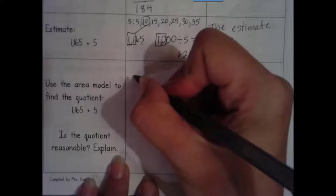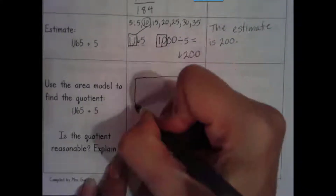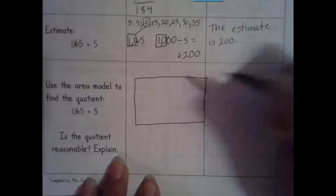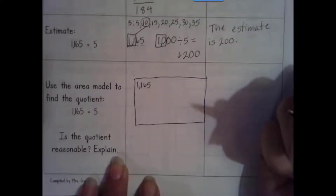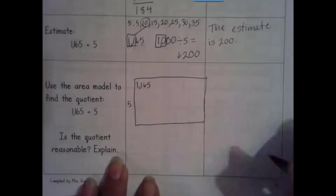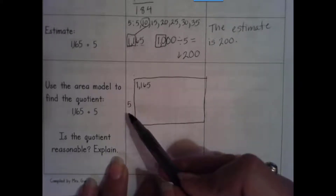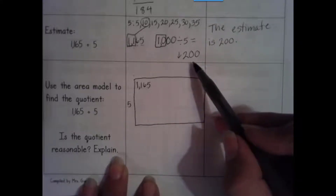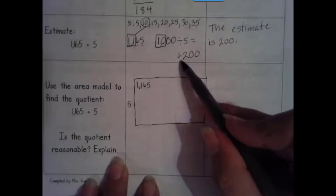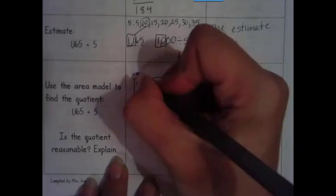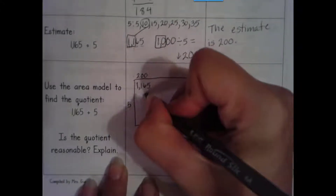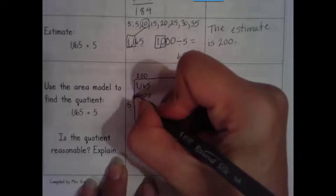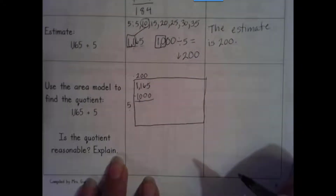Let's go ahead and draw our rectangle for the area model. Inside we have 1,165 units and we're going to divide into groups of 5. I'm going to take out a large group. I found that 200 is close but low, so I'm going to start with 200 — because 5 times 200 is 1,000. The two placeholders move it over two places: 2 times 5 is 10, so 200 times 5 is 1,000.